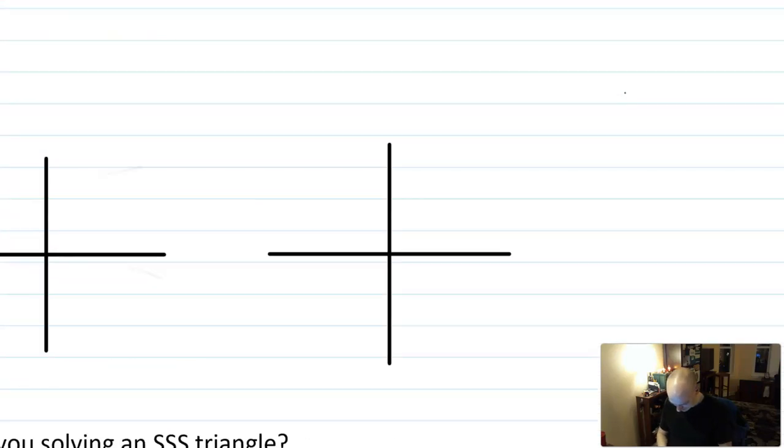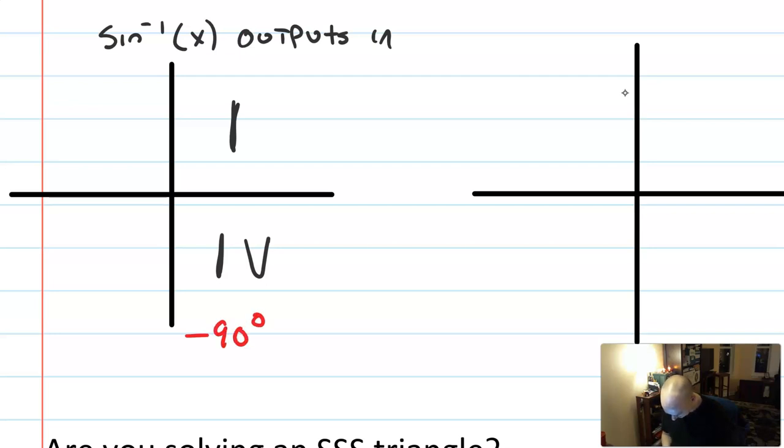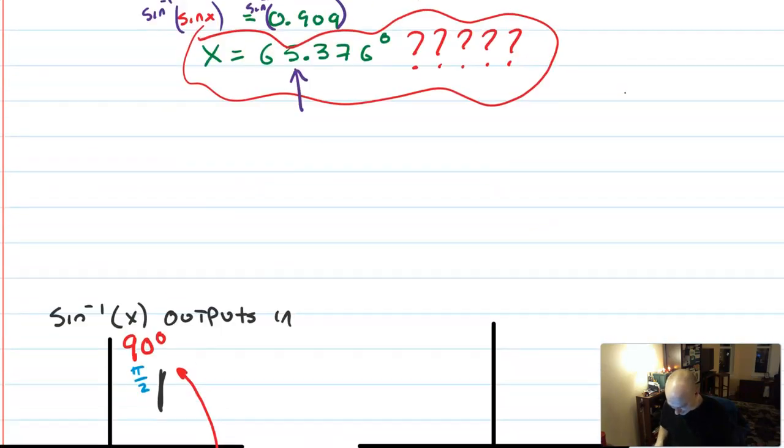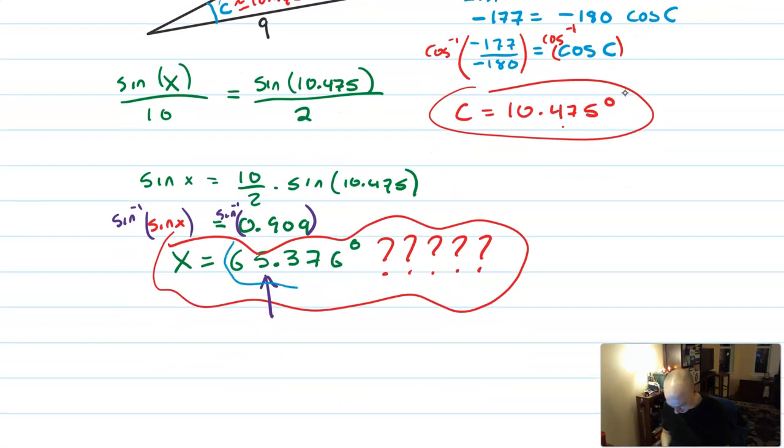And I did everything correctly, and my calculator's in the right mode, but my calculator, for some reason, gave me an answer that is clearly wrong. Well, here's what's going on. Do you remember that sine inverse, and you may remember this from last year, or you might remember this from the end of chapter 4 if we have covered it before, that sine inverse of X has outputs in quadrant 1 and quadrant 4.